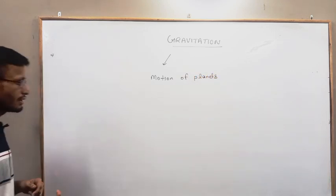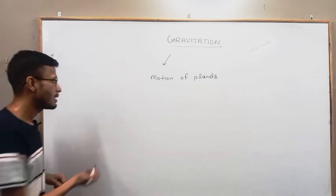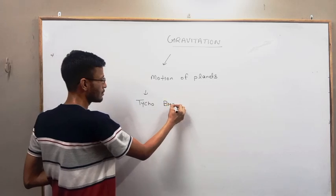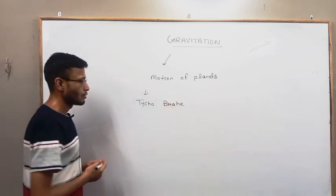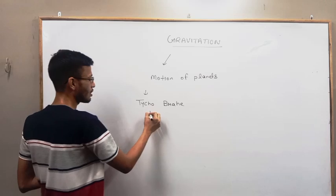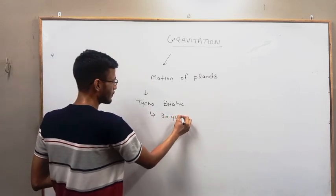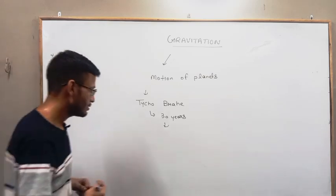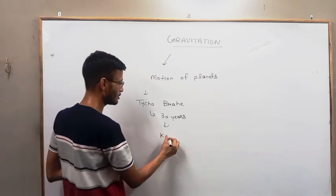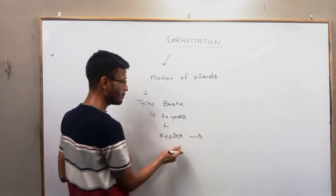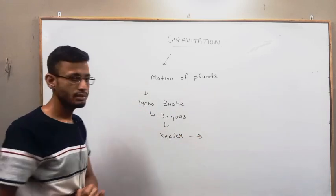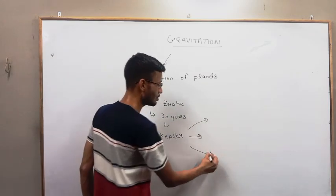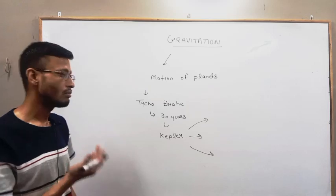So there was a scientist named Tycho Brahe who researched for around 30 years, and his colleague or assistant known as Kepler. Kepler combined Tycho Brahe's 30 years of data into three laws which deal with the law of planetary motion.